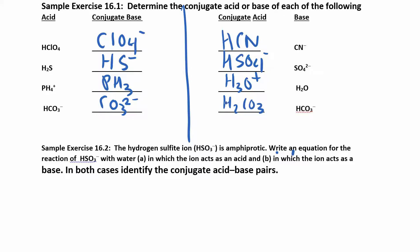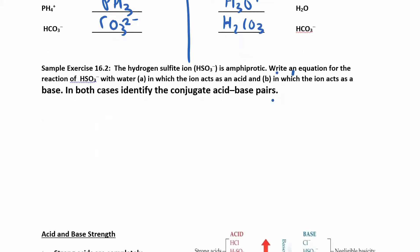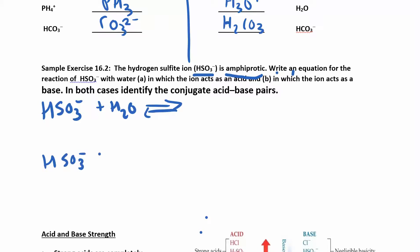There are a couple more of those for homework. In this problem, HSO3 minus — the hydrogen sulfite ion — is amphiprotic, meaning it can act as both an acid and a base. They want you to write two reactions: one where it's acting as an acid and one where it's acting as a base. So you have two reactions: HSO3 minus plus water going to equilibrium, and again HSO3 minus plus water. In one, treat HSO3 minus as the acid and water as the base; in the other, treat it as the base and water as the acid.